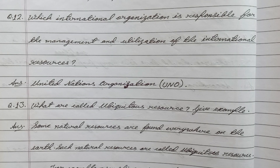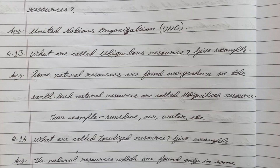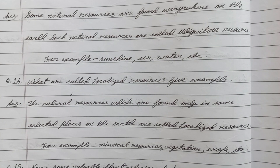Question number twelve: Which international organization is responsible for the management and utilization of international resources? Question number thirteen: What are called ubiquitous resources? Give an example. Answer: Some natural resources are found everywhere on the earth - such natural resources are called ubiquitous resources. For example, sunshine, air, water, etc.